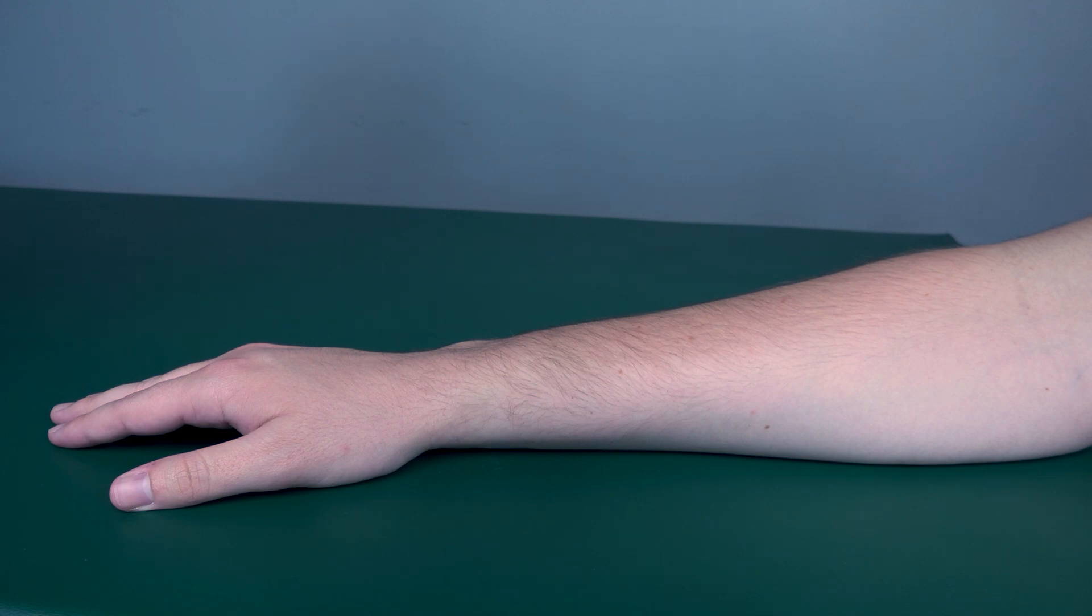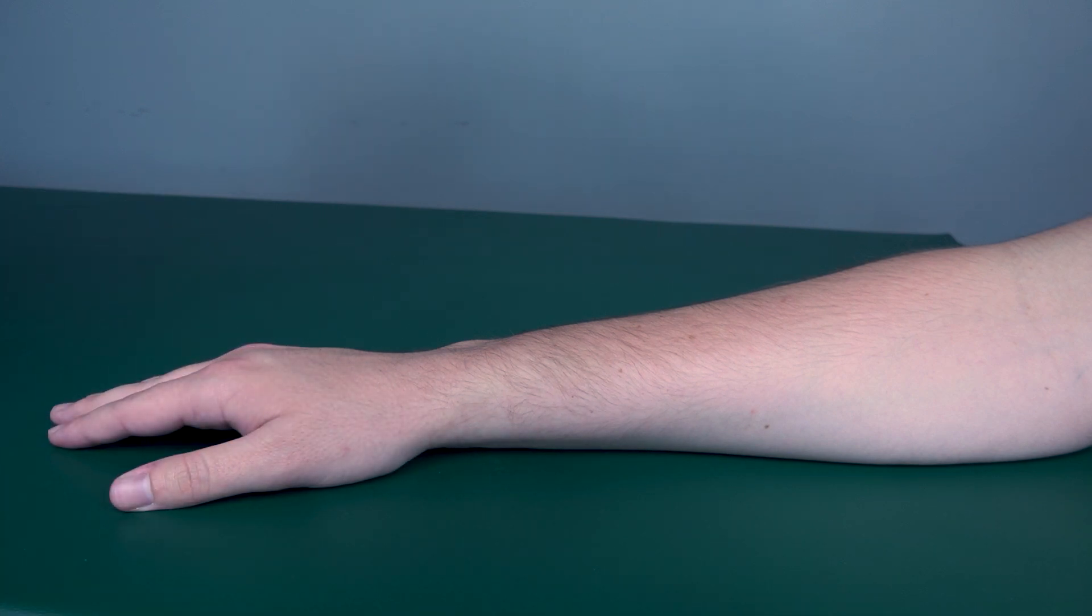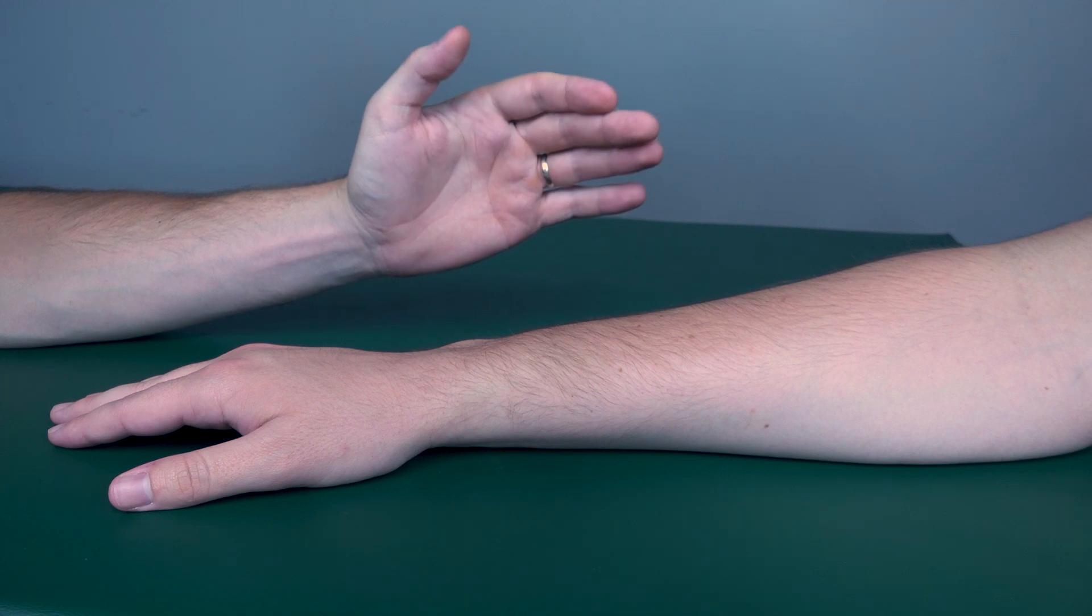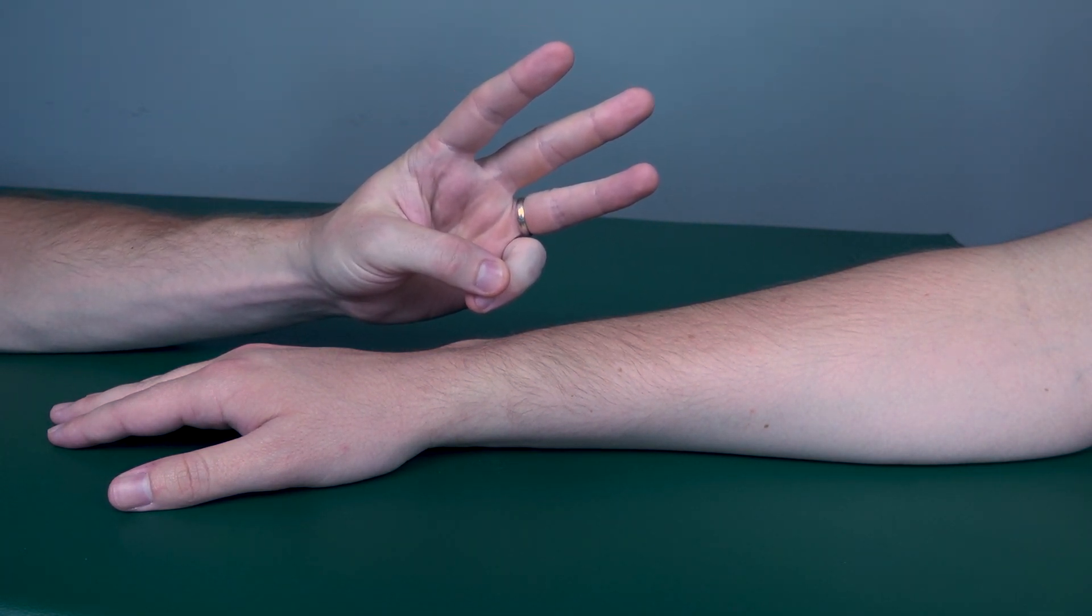Testing wrist extension against gravity position. The patient will be in a seated position with their forearm resting on a table, palm towards the table. To test for wrist extension, there are three muscles that we're going to look at here.